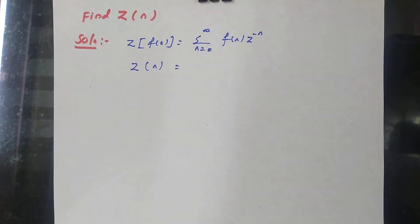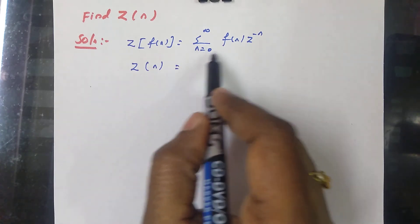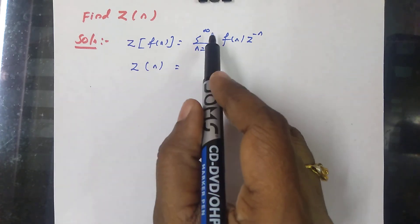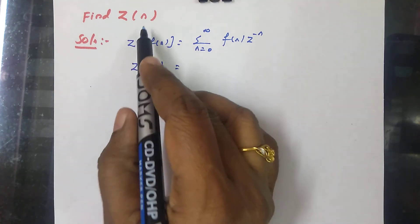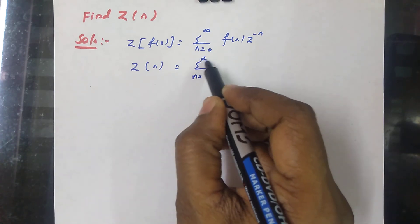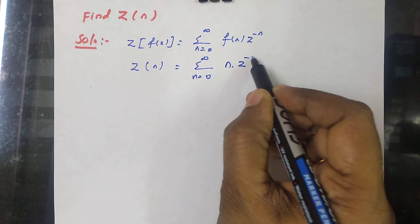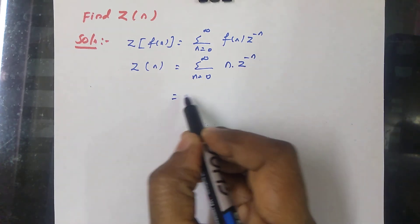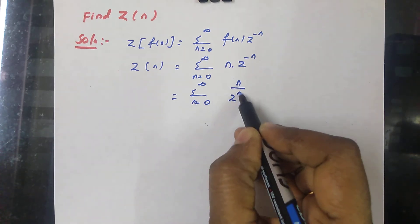Now the next question: find Z of n. By the same manner as the previous problem, Z of f of n equals, by the definition, sigma from n equal to 0 to infinity of f of n times z to the power minus n. Here f of n is n, so Z of n equals sigma from n equal to 0 to infinity of n times z to the power minus n, which can be written as sigma from n equal to 0 to infinity of n by z to the power n.